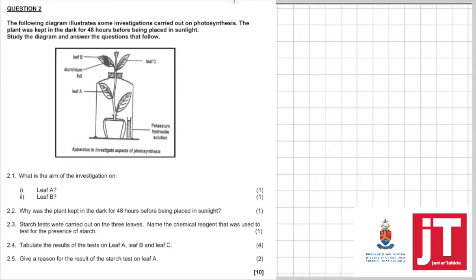Leaf B, you can see there's a dark piece of paper on that leaf. Immediately some parts of the leaf is exposed to sunlight and some is not. So here the aim will be to investigate if sunlight is a requirement for photosynthesis.